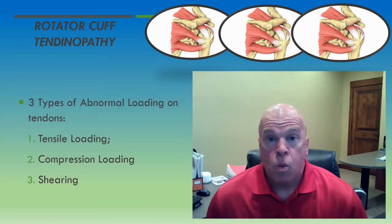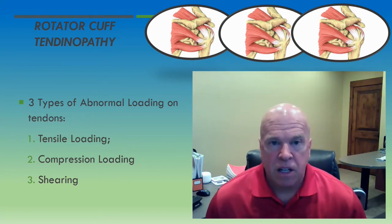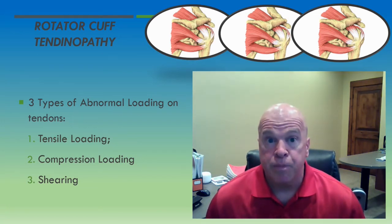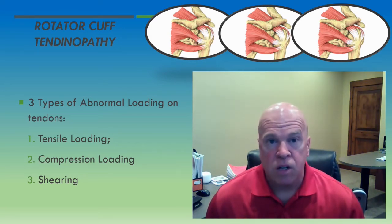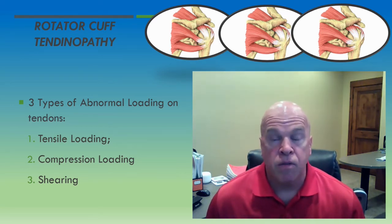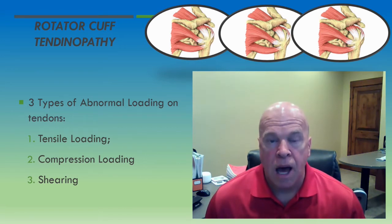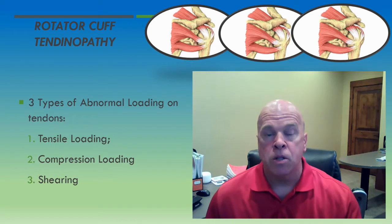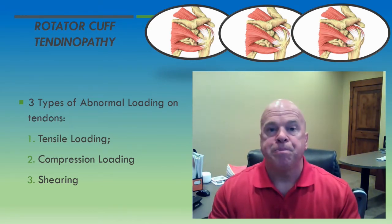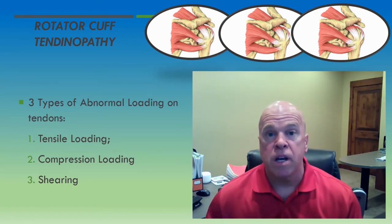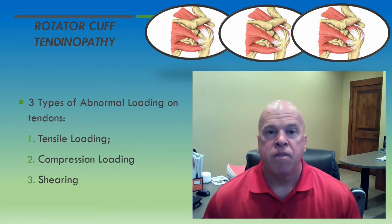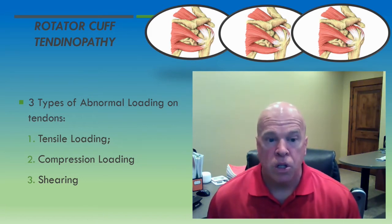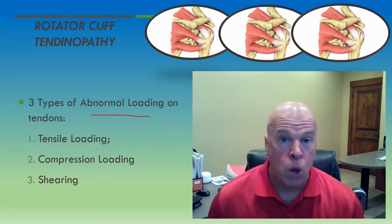Everything goes along well with these tendons until there's some upset in the internal homeostasis of the tendon. This internal upset is registered in the tenocyte cells. When there is an upset in tenocyte homeostasis, the tenocytes fail to function properly, and the output products — the collagen fibers and the extracellular matrix — begin to deteriorate. The upset in internal homeostasis of a tendon comes about through what is referred to in the literature as abnormal loading.